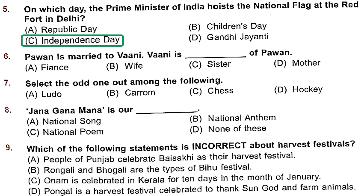Question 6: Pawan is married to Vani. Vani is the dash of Pawan. When two people marry each other, they are called a married couple. The female is called wife while the male is called husband. Here, Vani is female, so Vani would be called the wife of Pawan. Option B is the right answer.